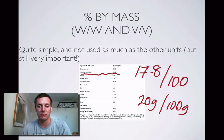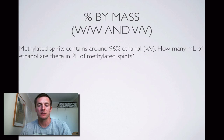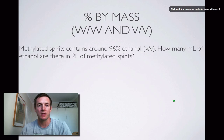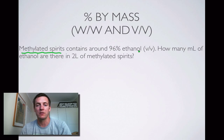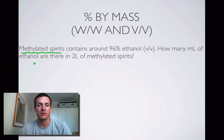Here is an example that uses volume instead of mass but it's exactly the same idea. It refers to methylated spirits, which are basically ethanol with poisons added so you can't use it to make your own alcoholic drinks at home. The question asks: how many milliliters of ethanol are there in two liters of methylated spirits? We know that 96 percent of that two liters is going to be ethanol.